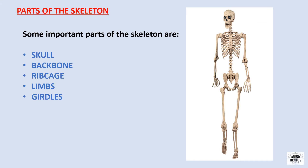Bones are composed of calcium, phosphorus, and a fibrous substance called collagen. Parts of the skeleton: our skeleton consists of the skull, backbone — which extends from the neck to the lower back — ribcage, limbs (forelimbs and hind limbs), and girdles: pelvic girdle and pectoral girdle. Now let's study them in detail.